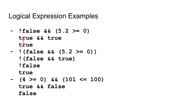Now let us enclose everything inside of parentheses and apply the not at the end. We have inside of parentheses: false and 5.2 is greater than or equal to zero, and then we not it. We do the inner parentheses first: 5.2 is greater than or equal to zero, which is true. So we get false and true, which from our truth tables is false. But then we not that false, so we get true.